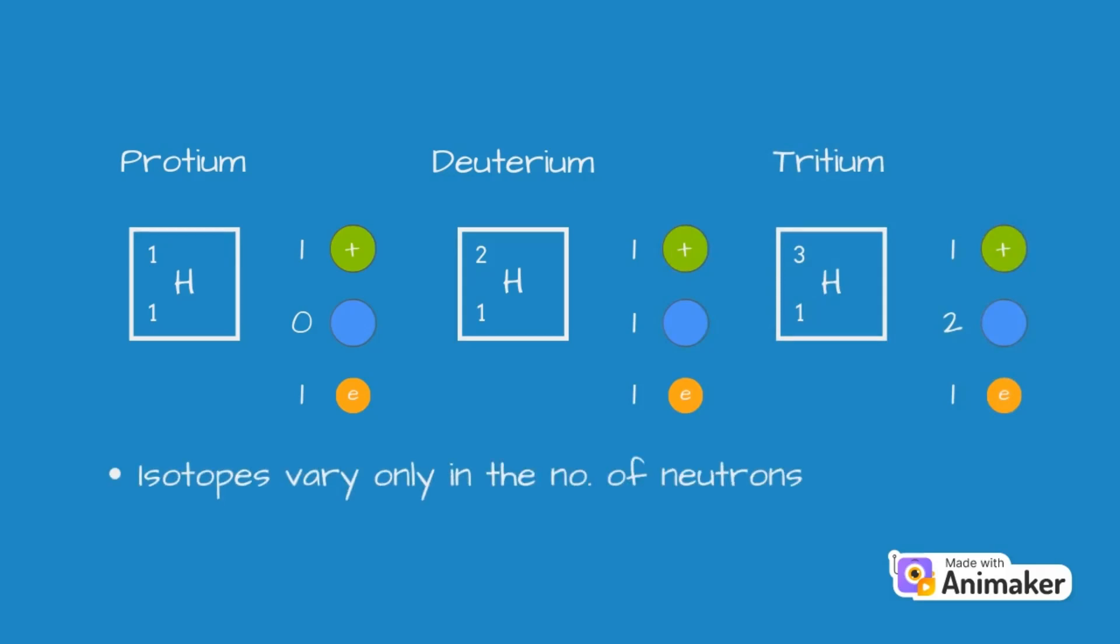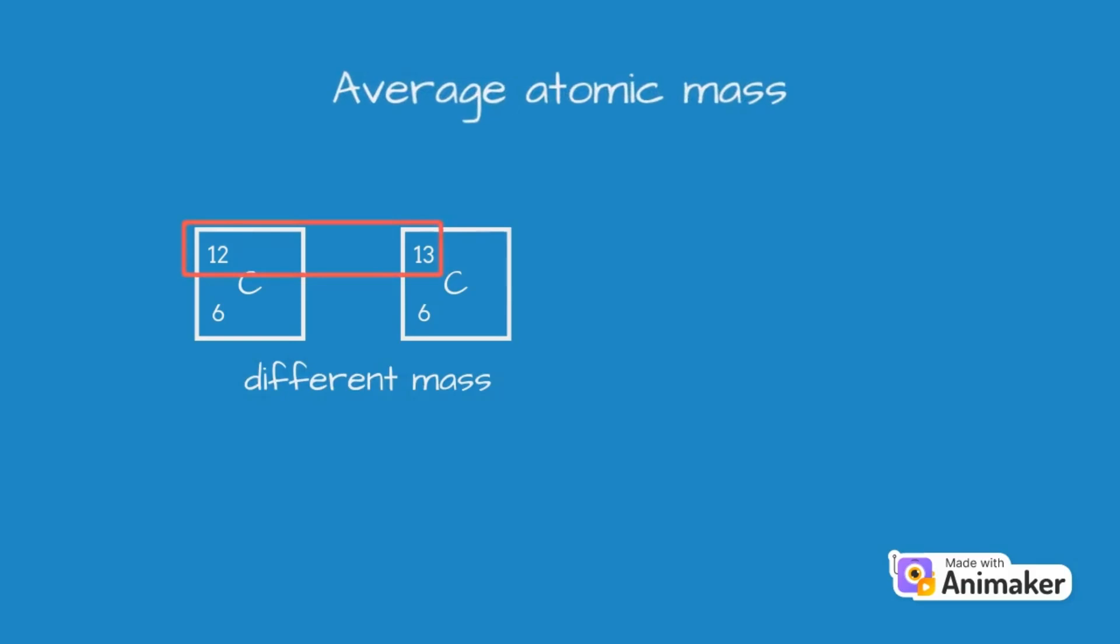Since the isotopes vary only in the number of neutrons they have, chemically they all react the same way. Now, because the isotopes have different number of neutrons, they will have different masses. So, we need to calculate the average atomic mass of all the isotopes of a particular element.